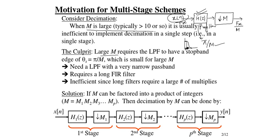The stop band should be at π/M. Since M is very large, the stop band is merging almost to the passband, so the transition band is shrinking — you are approaching an ideal filter. When you want to reduce the transition width you need a filter of very very high order, more than 300 orders, which is very difficult to design.